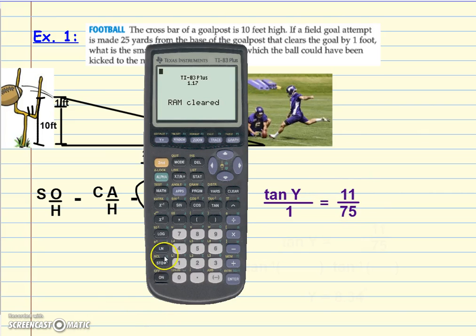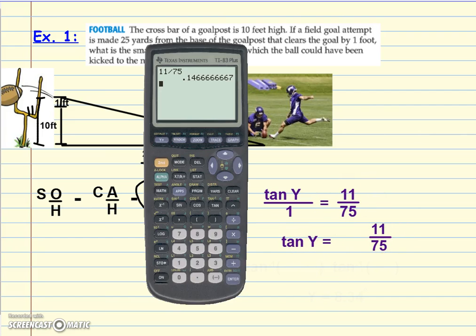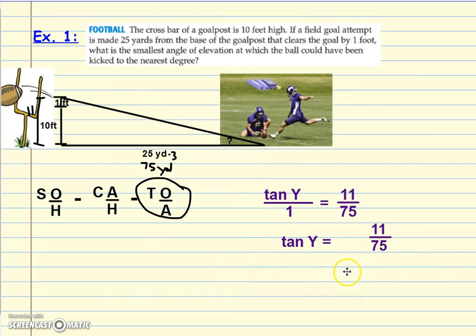Start that off: 11 divided by 75. Let's see if it's something nice. Gross, it's a long number. Do not round this off—very important, don't round it off, kind of like we said yesterday. If you want, you can just leave it as a fraction. We can say the tangent of y is just that fraction, and then we can get another exact answer.